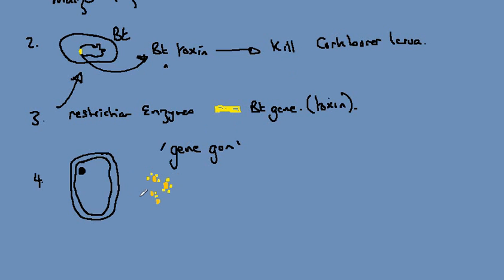These are fired at high velocity at the plant cell, introducing the Bt gene to the interior of the plant cell. So the plant cell gets the gene.